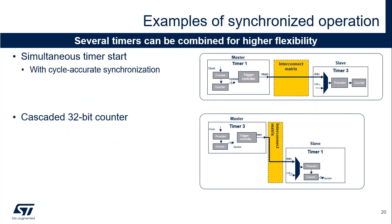Two examples of synchronized operation are presented. The first shows how two timers can be simultaneously started, with a mechanism allowing the master timer to start slightly delayed to compensate for the master-slave link delay and have all timers synchronized with cycle accuracy. By combining the channels of timers 1 and 3, it's possible to have up to 8 synchronized PWM channels. The second example shows how to create a 32-bit timer by cascading two 16-bit timers, where the update event on counter rollover is used as the input clock for the slave timer — timer 3's counter holds the least-significant 16 bits and timer 1's counter holds bits 16 to 31.